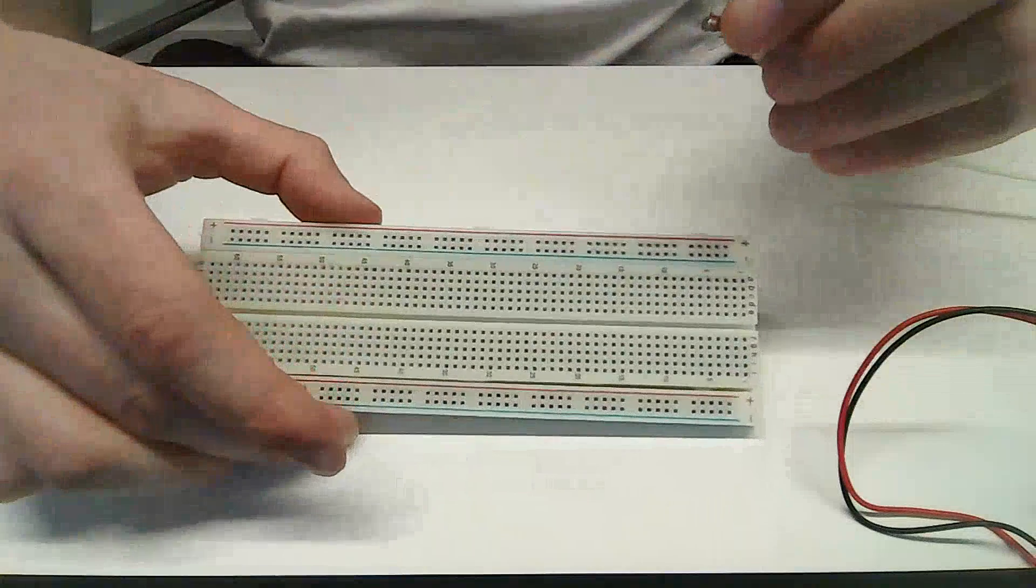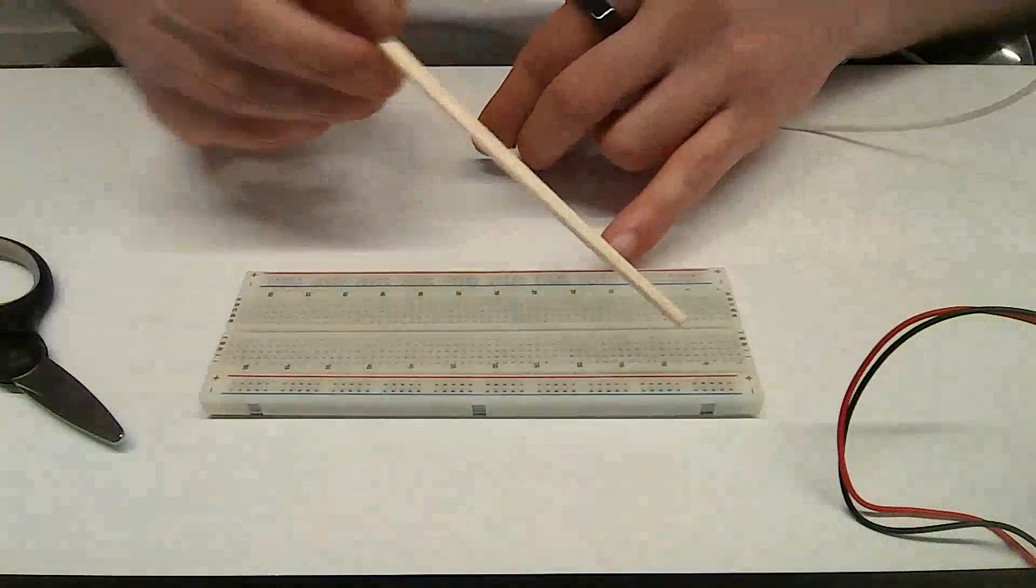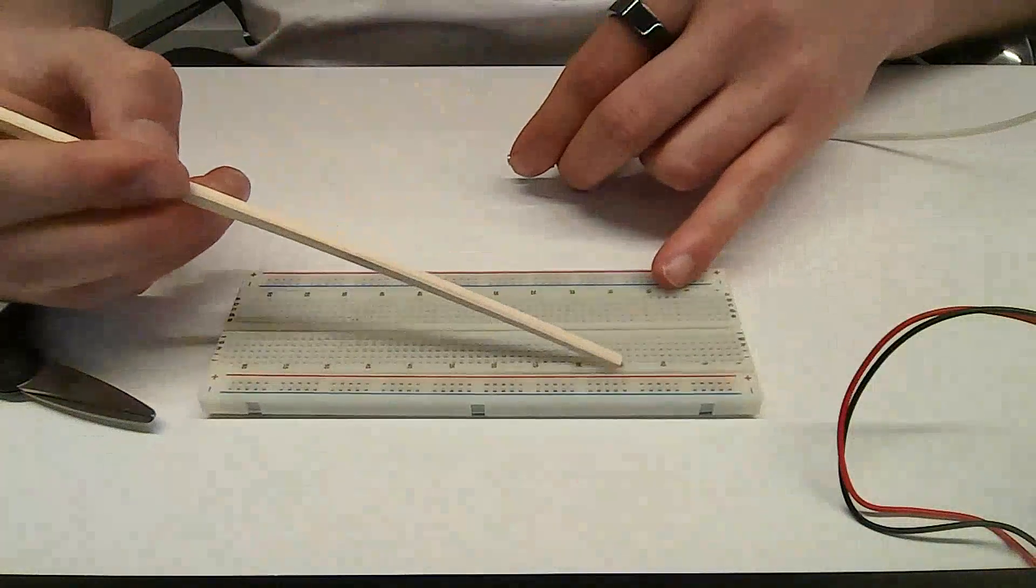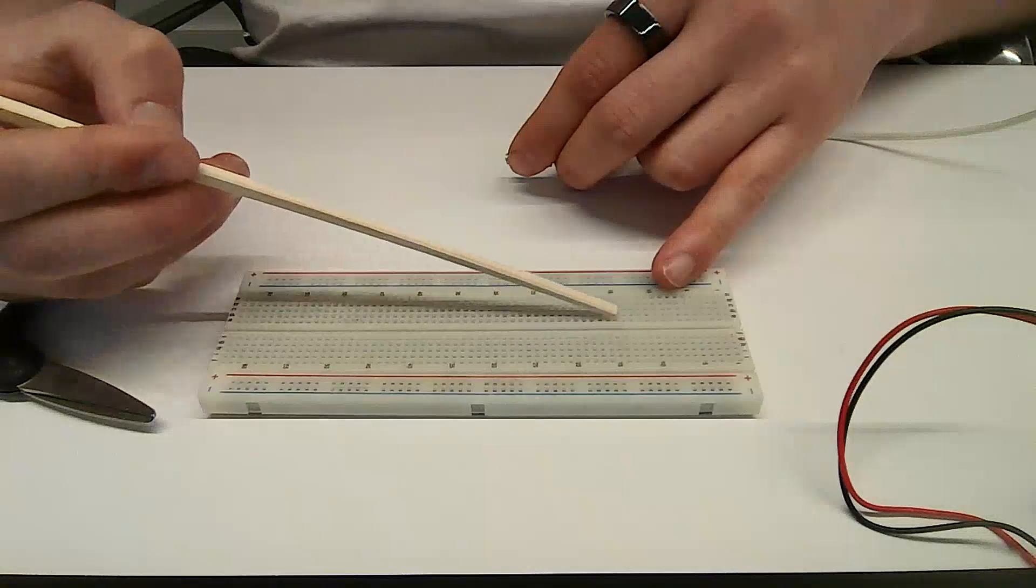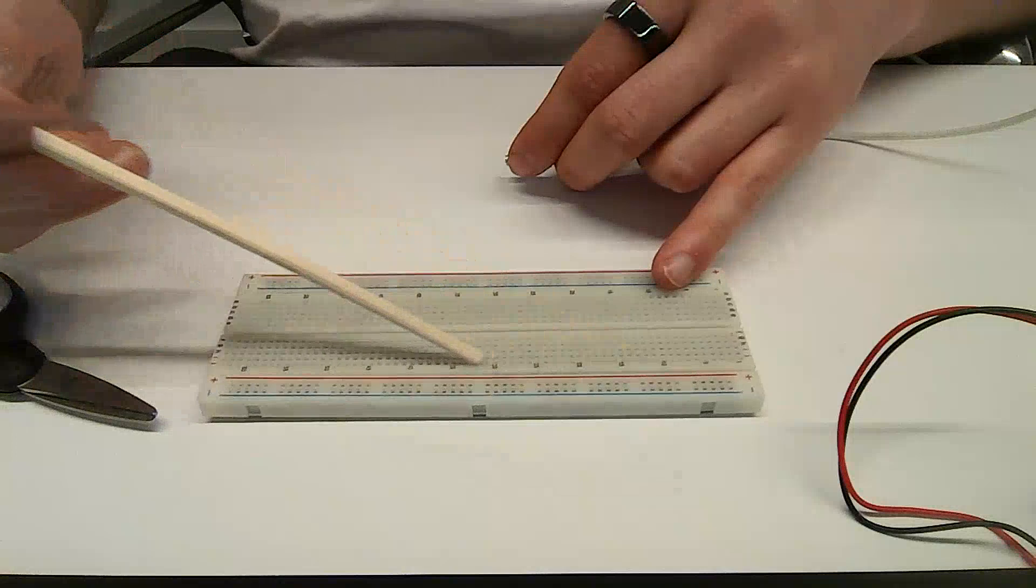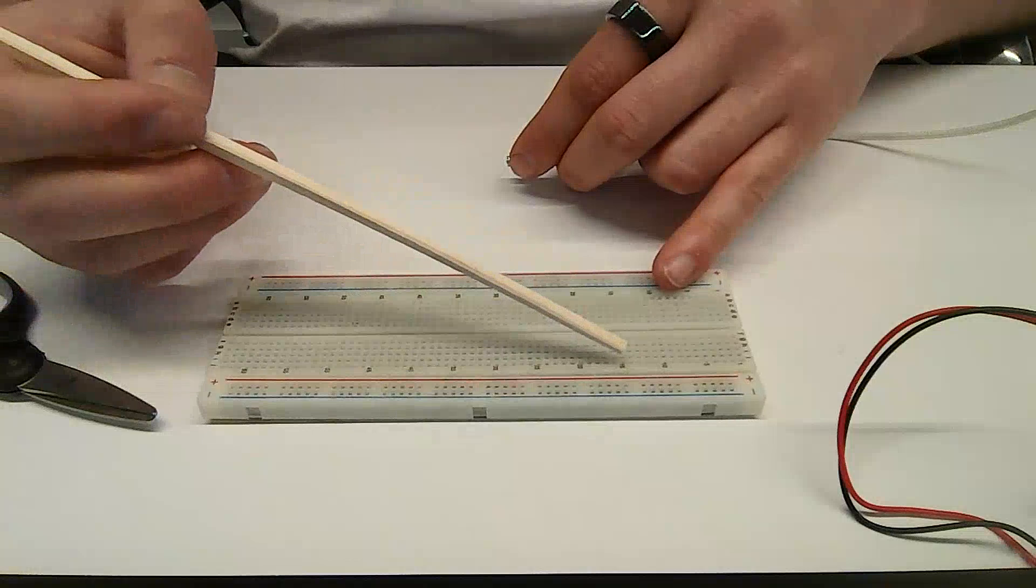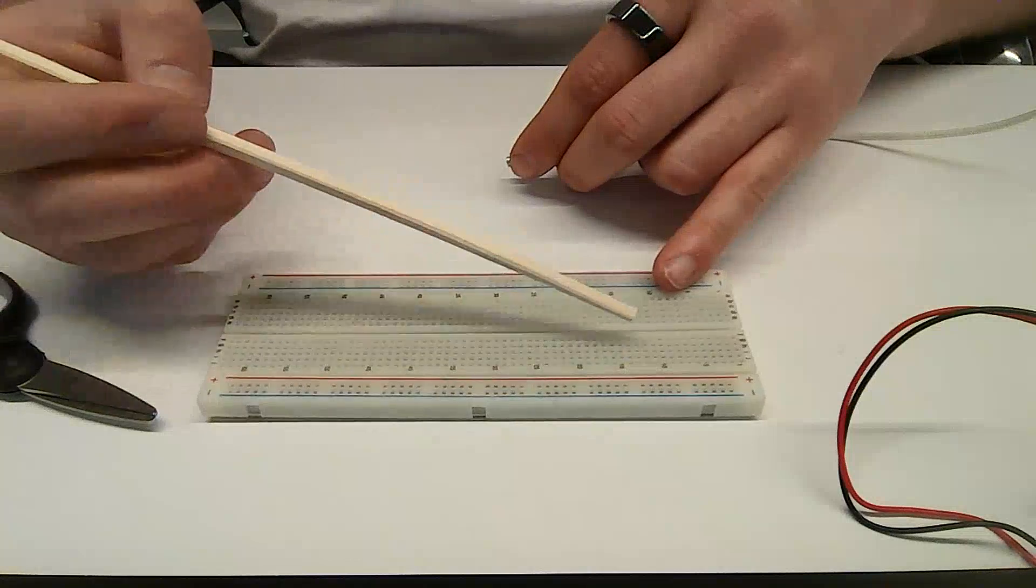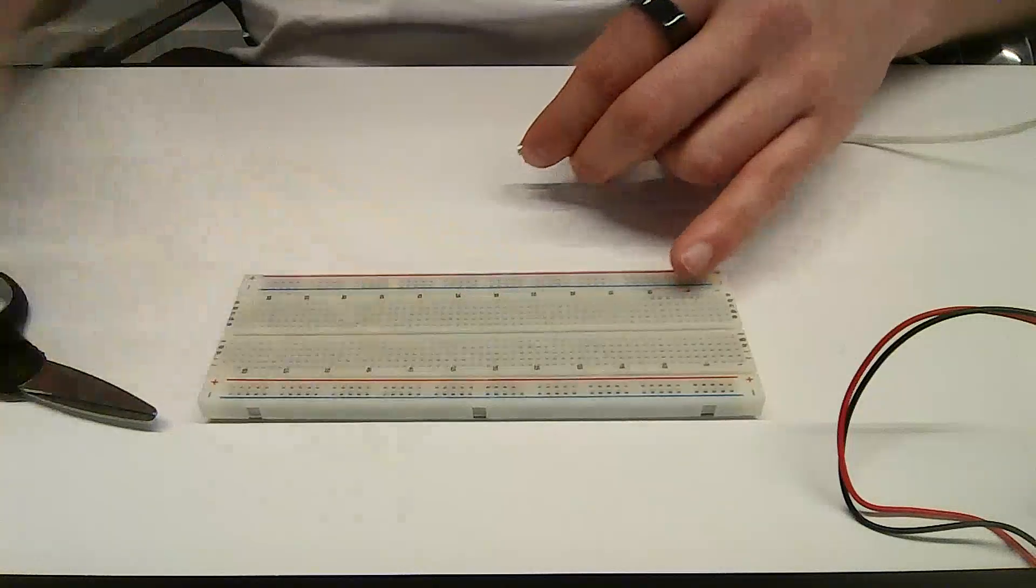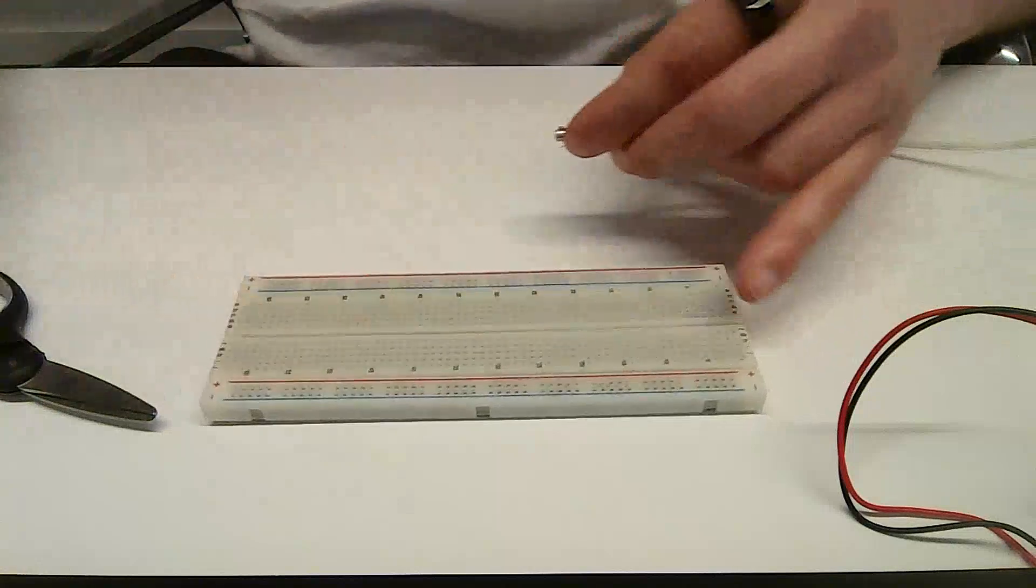So the breadboard has these numbers here. The way this works is everything in line. For example, row 15, all of these are in contact with each other and none of these going this direction are in contact. So if I have a wire here and a wire here, they're not connected. If I have a wire here and a wire here, they are connected. Anything across this channel is also not connected.